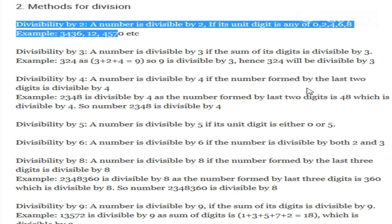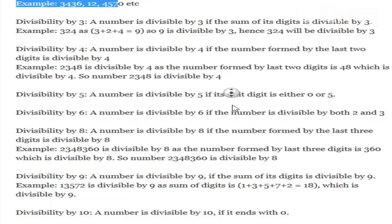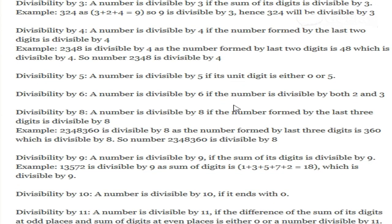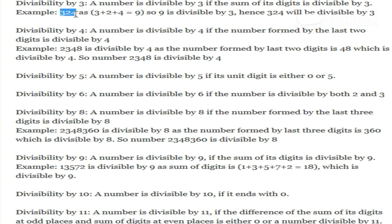Divisibility by 3: any number is divisible by 3 if the sum of its digits is divisible by 3. For example, if the number is 324, we sum up its digits: 3 plus 2 plus 4 equals 9. Since 9 is divisible by 3, that means 324 is also divisible by 3.